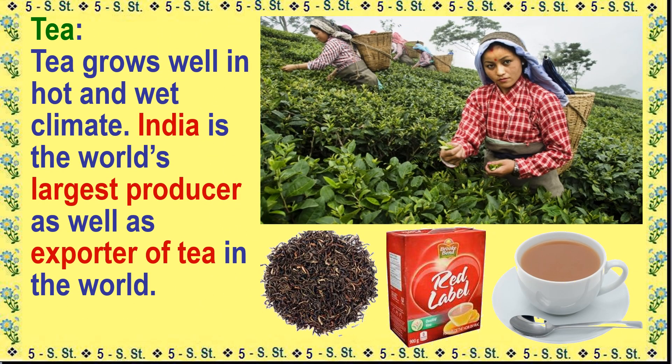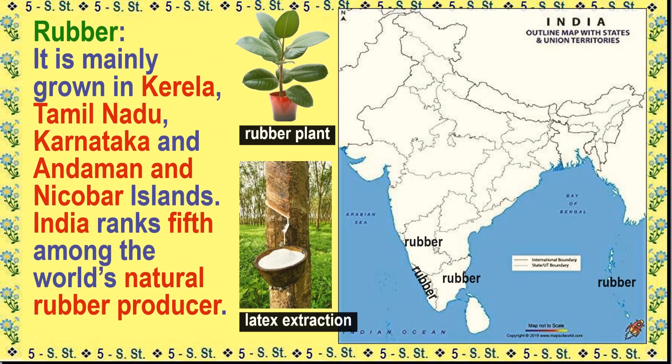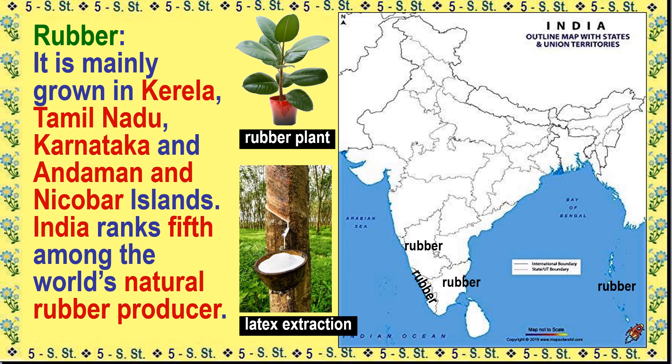Tea grows well in a hot and wet climate. India is the world's largest producer as well as exporter of tea. Tea is grown in Assam, parts of West Bengal, and the Nilgiri Hills in the south. Rubber is mainly grown in Kerala, Tamil Nadu, Karnataka, and the Andaman and Nicobar Islands. India ranks fifth among the world's natural rubber producers.